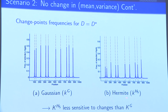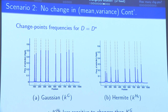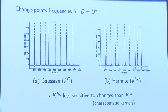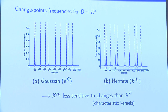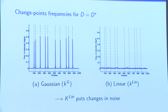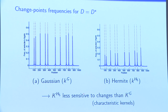We have also considered another kernel, the Hermite kernel, which is related to Hermite polynomials. Its main idea is that it is sensitive to changes in distributions up to the first five moments. The performance in terms of exact recovery frequency is better than with the linear kernel, but there is still a difference compared to what the Gaussian kernel provides, mostly because the Gaussian kernel is a characteristic kernel, which is not the case for the Hermite kernel.